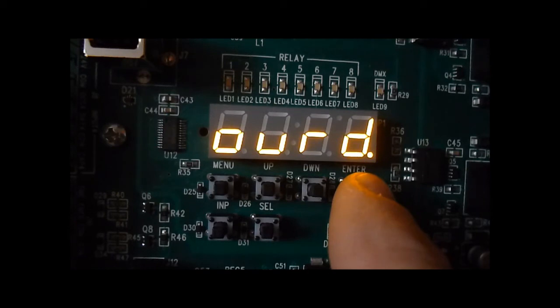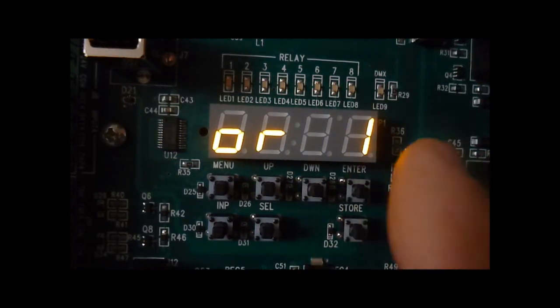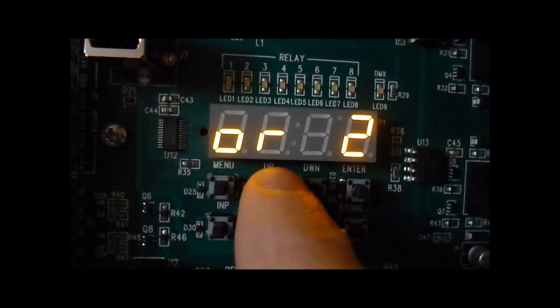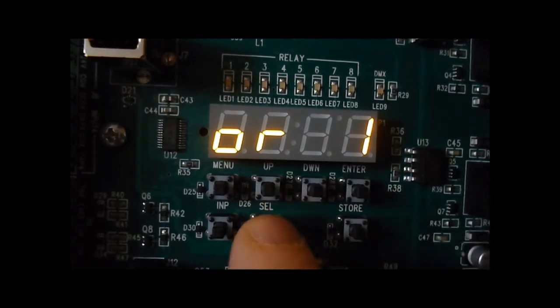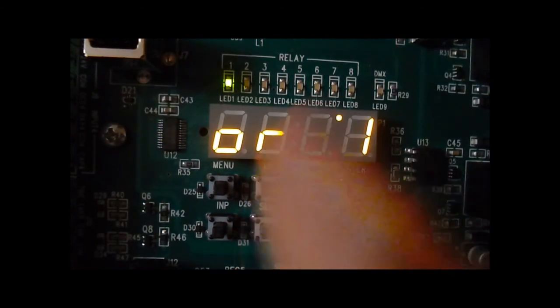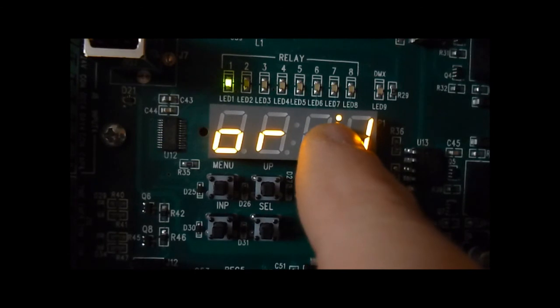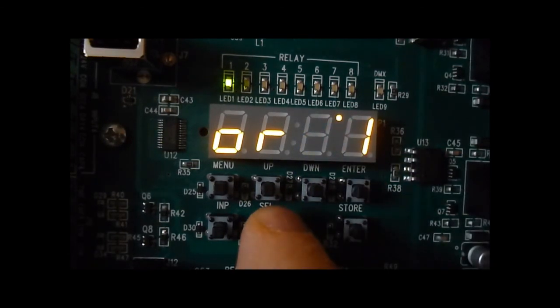You can select your zones. Press select, the relay goes on. The top LED is on, and that means the output is overridden in the on state.